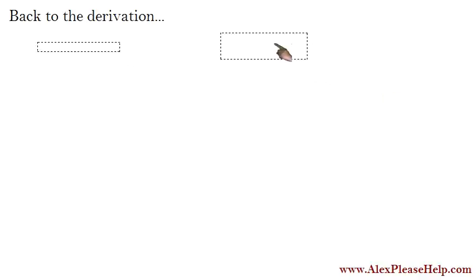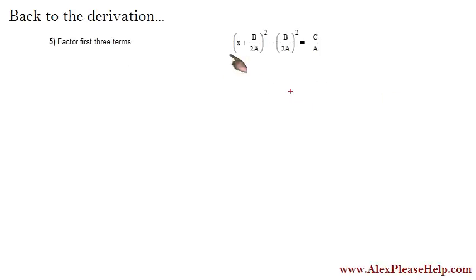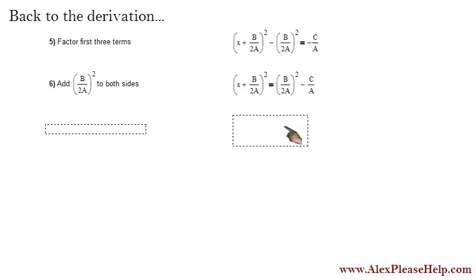Back to the derivation. I'll call up step five again, just so you can be reminded where we are. We have a perfect square term here, and another perfect square term equals minus c over a. The next step, ultimately we're trying to get x by itself, so we have to get all of the terms away from the left side and leave x behind. So we add b over 2a squared to both sides. That cancels this term here, and then we have b over 2a squared minus c over a on the right.